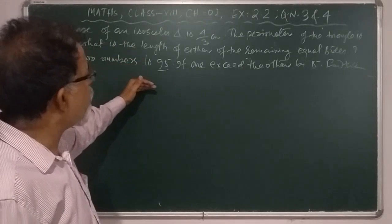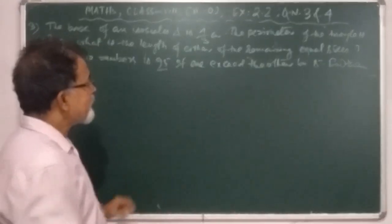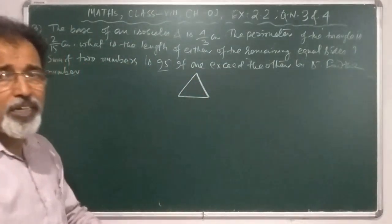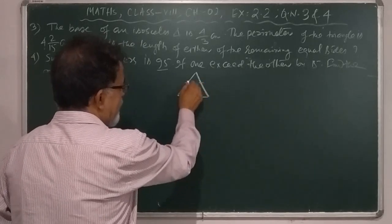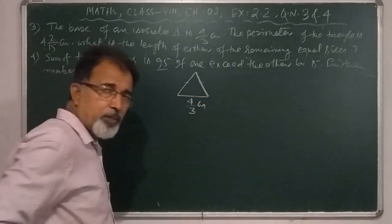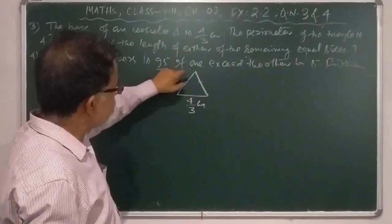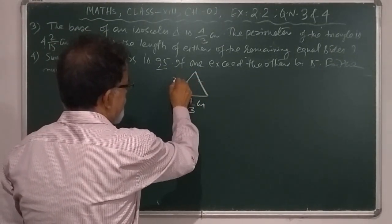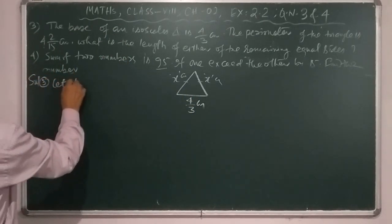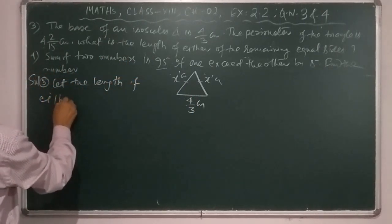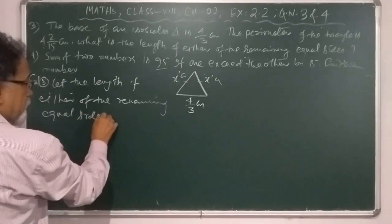Here, the length of each of the equal sides is unknown. In order to find the length, I am going to draw an isosceles triangle. From this triangle, you can easily understand the question and its solution. This is a triangle in which these two sides are equal. This is the base, which is given as 4/3 cm. We will use the letter x to denote these two equal sides. Let the length of each of the equal sides be x cm.